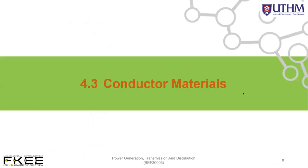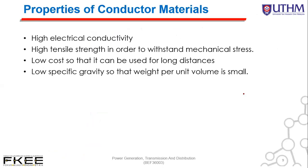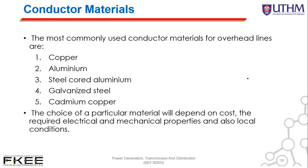Now let's see the conductor materials. Conductor material must have high electrical conductivity, high tensile strength to withstand mechanical stress, low cost so that it can be used for long distances, and low specific gravity so that weight per unit volume is small. The most commonly used conductor materials for overhead lines are copper, aluminium, steel core aluminium, galvanized steel, and also cadmium copper.